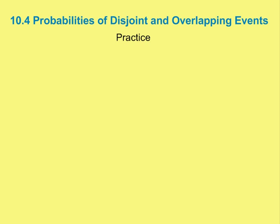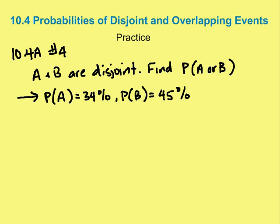Now that we've understood and learned some of the formulas involved in probabilities of disjoint and overlapping events, let's apply them to a couple of our homework problems. The first one is going to be from 10.4a, number 4.